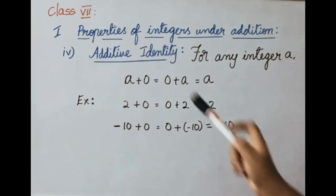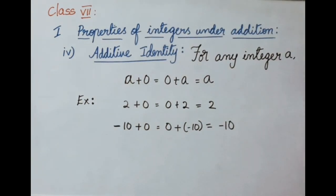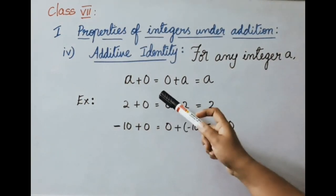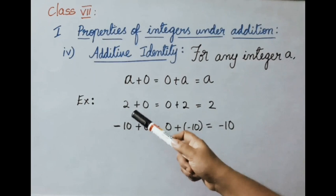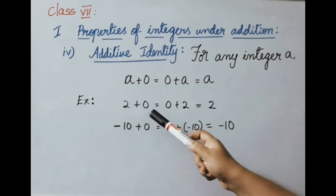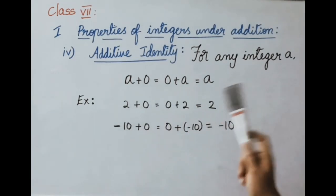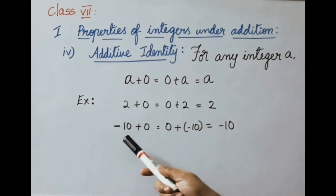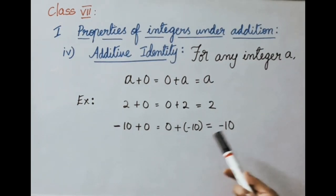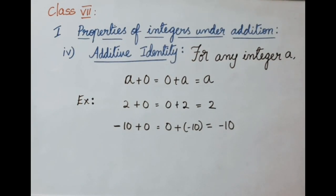Fourth one: additive identity. For any integer A, A plus 0 equals 0 plus A equals A. If you add 0 to any integer, you get the same integer. Example: 2 plus 0 equals 2, and 0 plus 2 also equals 2. Another example: minus 10 plus 0 equals 0 plus minus 10 equals minus 10. Therefore 0 is the additive identity of integers.